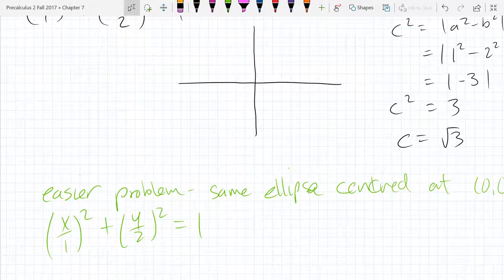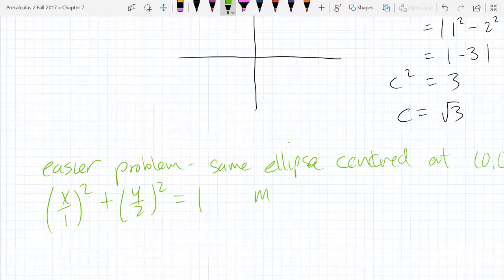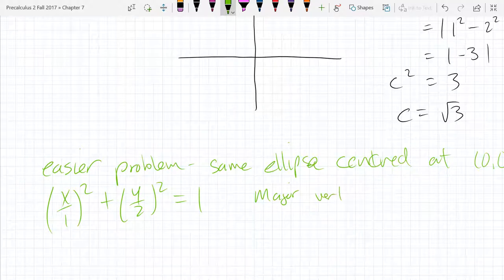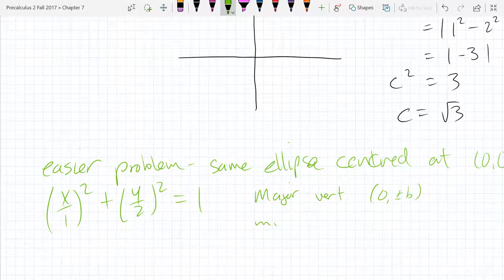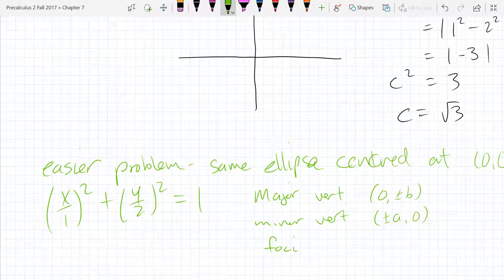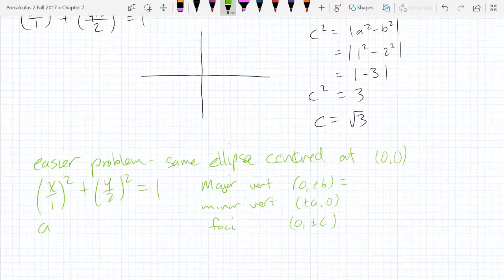And now I can use that table that I'm not going to scroll back up for. I'm just going to read off the paper in front of me here. We have our b is bigger. So we got a tall ellipse. So our major, it's in your notes too. You can look back and page in your notes. Major vertex. 0 plus minus b. Minor vertex is plus minus a 0. And then foci are 0 plus minus c. We have a, b, and c. We can easily fill them out.